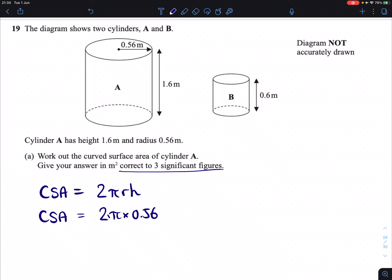which means we just need to sub in our radius and our height and let the calculator do the rest. So, 2 times pi times 0.56 times 1.6. Calculator then gives us 5.6297 and change.